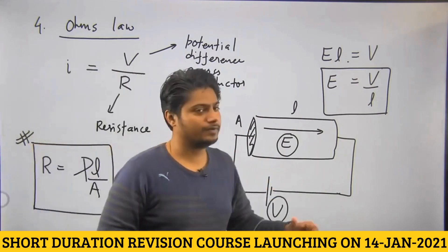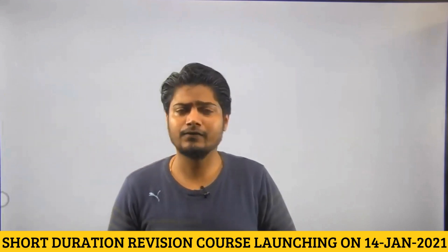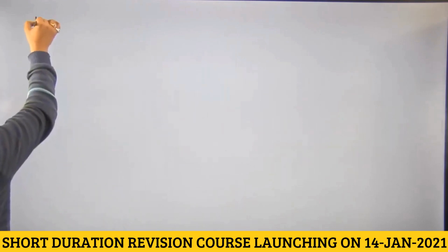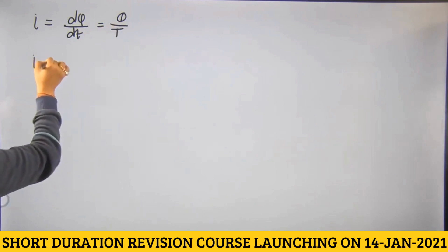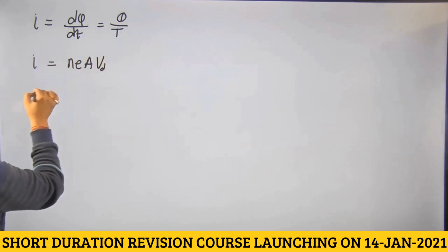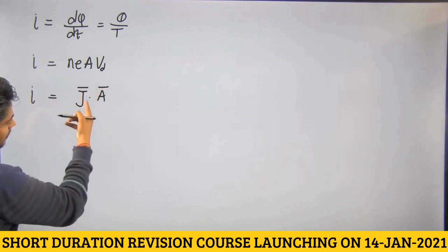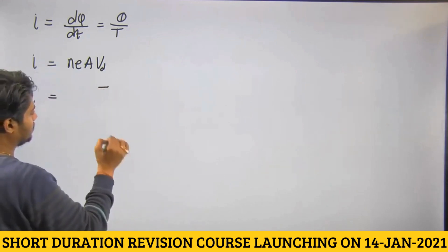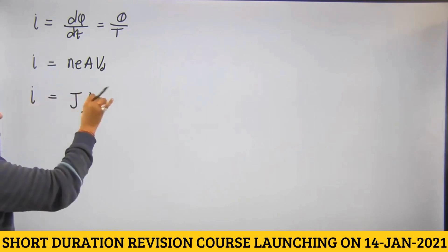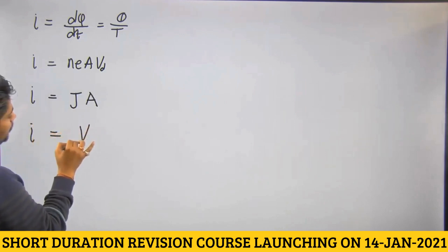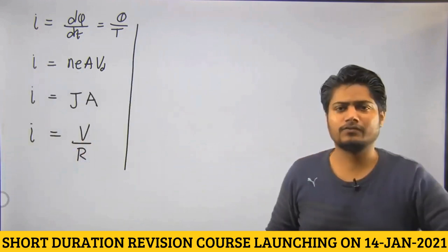These are the four expressions of electric current. Let us solve a few simple problems based on this understanding and see how these formulas can help us solve difficult problems. The first formula is I equal to dq by dt, or just q by t. The second formula is I equal to n e A v_d. The third formula is I equal to j dot A, or j into A — you generally do not have to use the dot product because j and A are always in the same direction for our syllabus. The fourth is I equal to V by R.